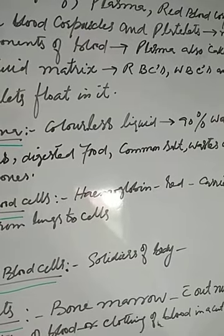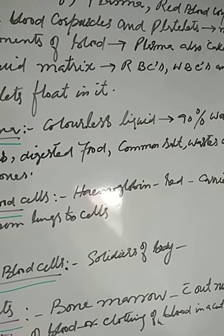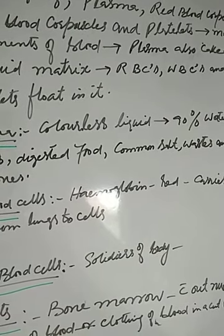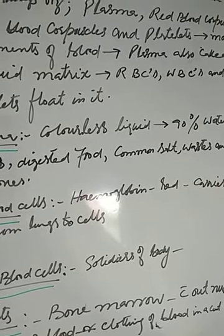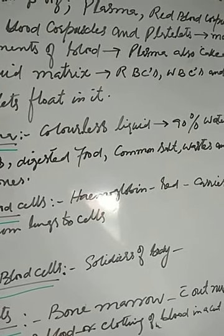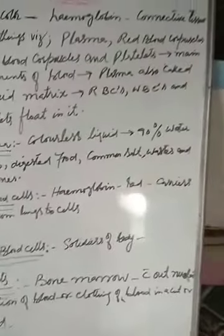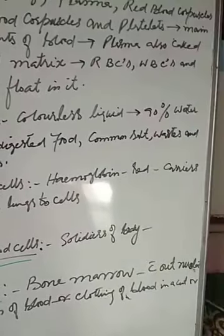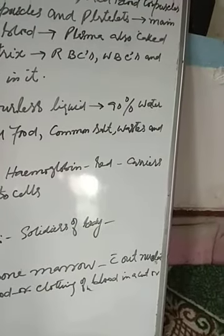RBCs carry oxygen from the lungs into all the cells of the body. It is actually the hemoglobin present inside blood cells which carries oxygen in the body. Hemoglobin performs a very important function of oxygen transport in the body.